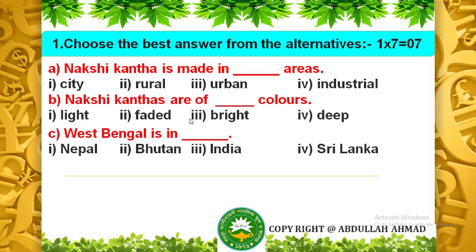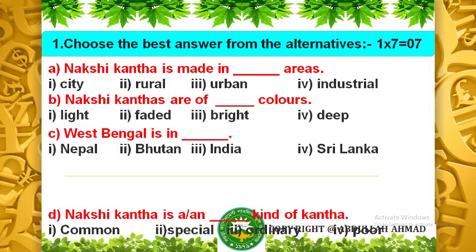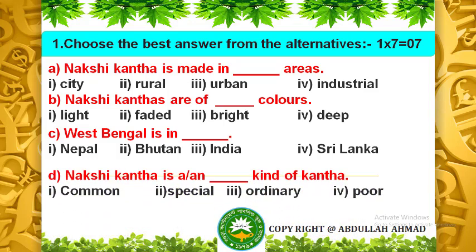Question C: West Bengal is in — Nepal, Bhutan, India or Sri Lanka? The correct answer is India. Question D: Noxikatha is a or an what kind of Katha? The options are common, special, ordinary and poor. The answer is special.